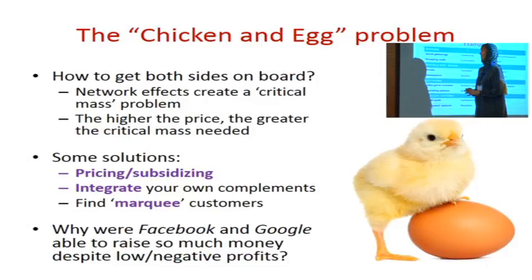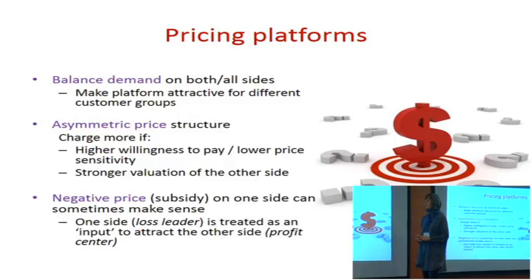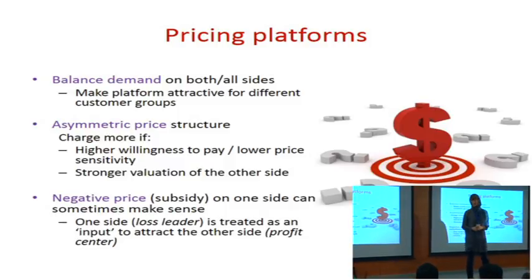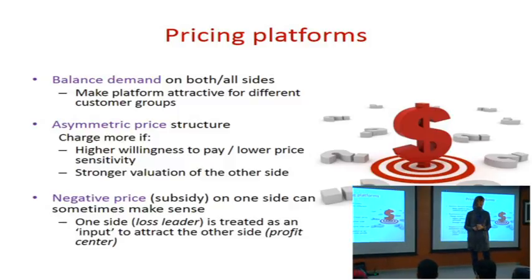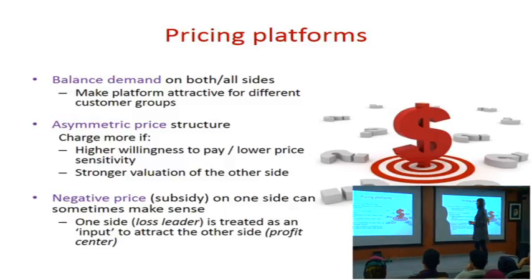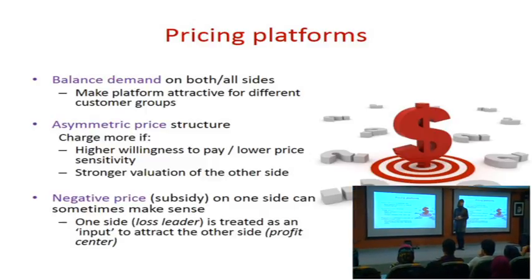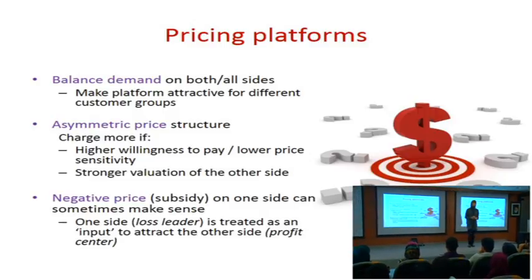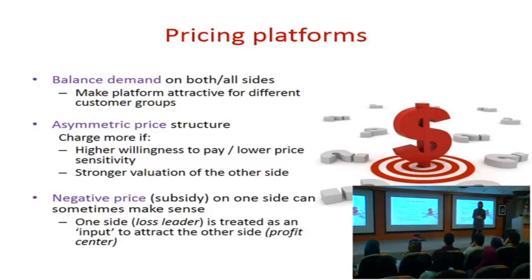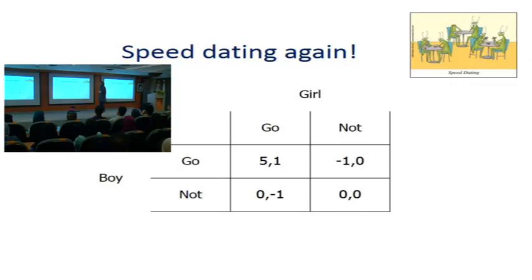That's a key insight from the platform literature: you typically don't price based on marginal cost. That's completely the wrong logic for platforms, particularly in the digital space. You have to think about who has willingness to pay for what and how price-sensitive people are. Consumers on a news platform tend to be very price-sensitive — they don't want to pay anything, they want things for free — whereas advertisers are businesses actually willing to pay to get access to those eyeballs.